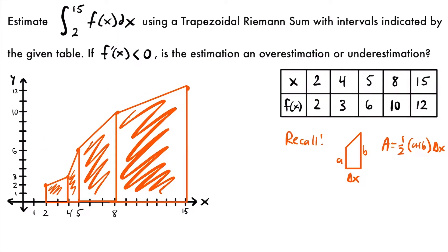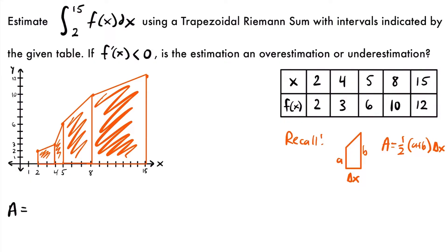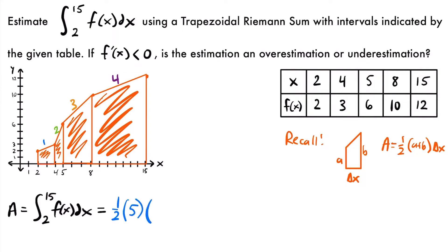The area approximating the definite integral from 2 to 15 of f(x) dx equals the sum of the areas of each trapezoid. For the first trapezoid: one-half times (2 plus 3) times 2, since the heights are 2 and 3, and the width is 4 minus 2 equals 2. For the second trapezoid: one-half times (3 plus 6) times 1, since the heights are 3 and 6, and the width is 5 minus 4 equals 1.